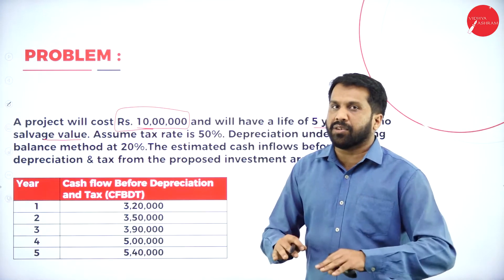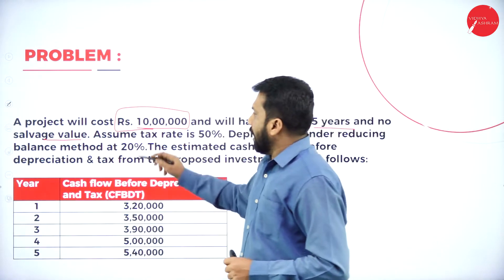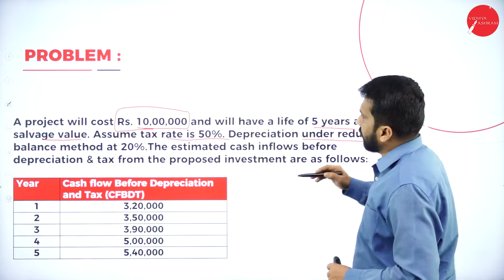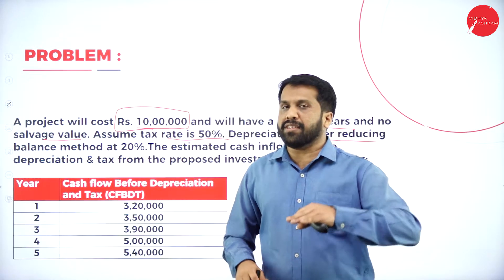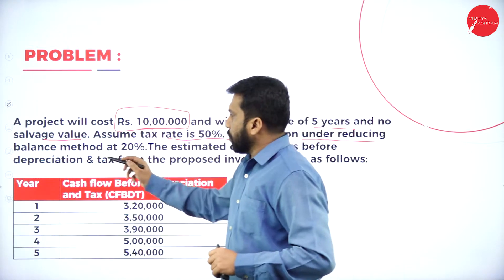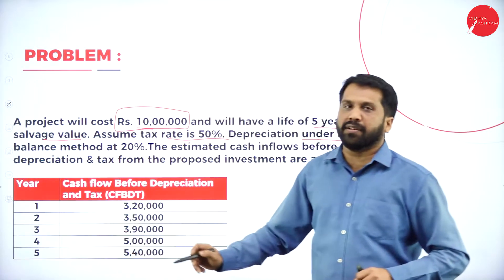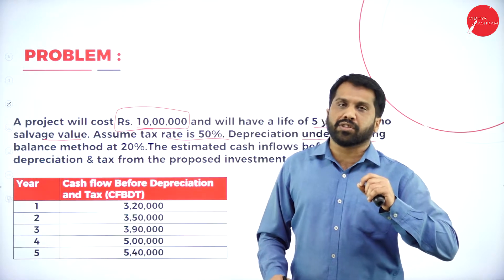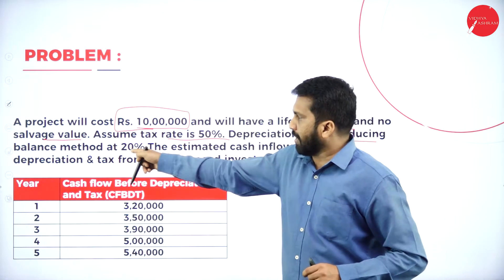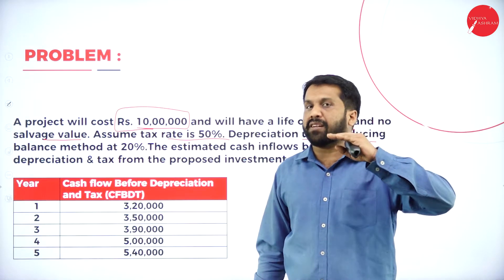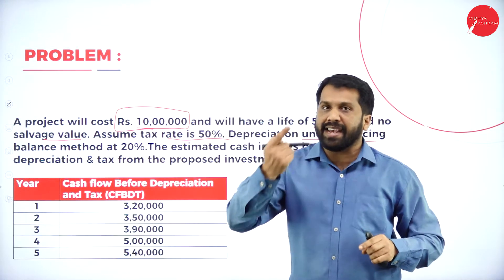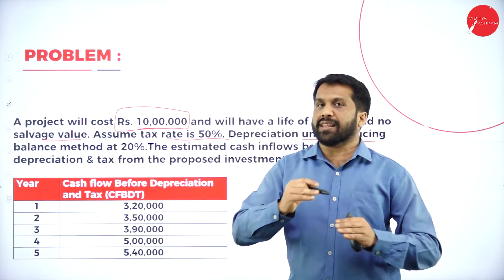Assume tax rate is 50 percent. Depreciation is under the reducing balance method, so every year the depreciation value will be reduced. We cannot simply do 10 lakh divided by 5 years. Under the reducing balance method: 10 lakh into 20 percent equals 2 lakh; 10 lakh minus 2 lakh equals 8 lakh; on 8 lakh, 20 percent gives 1 lakh 60 thousand.